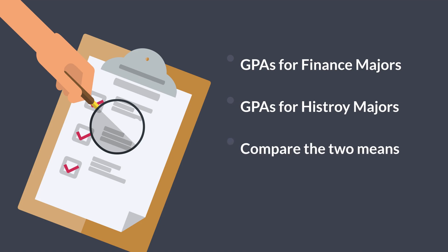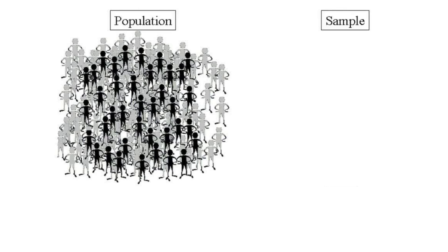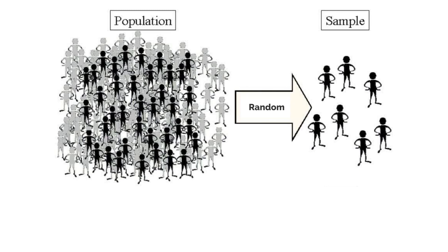In practice, it is generally difficult or inefficient to get the GPA for every single finance and history major on the planet, which is also called our population. So we rely on random sampling to make things easier for us.